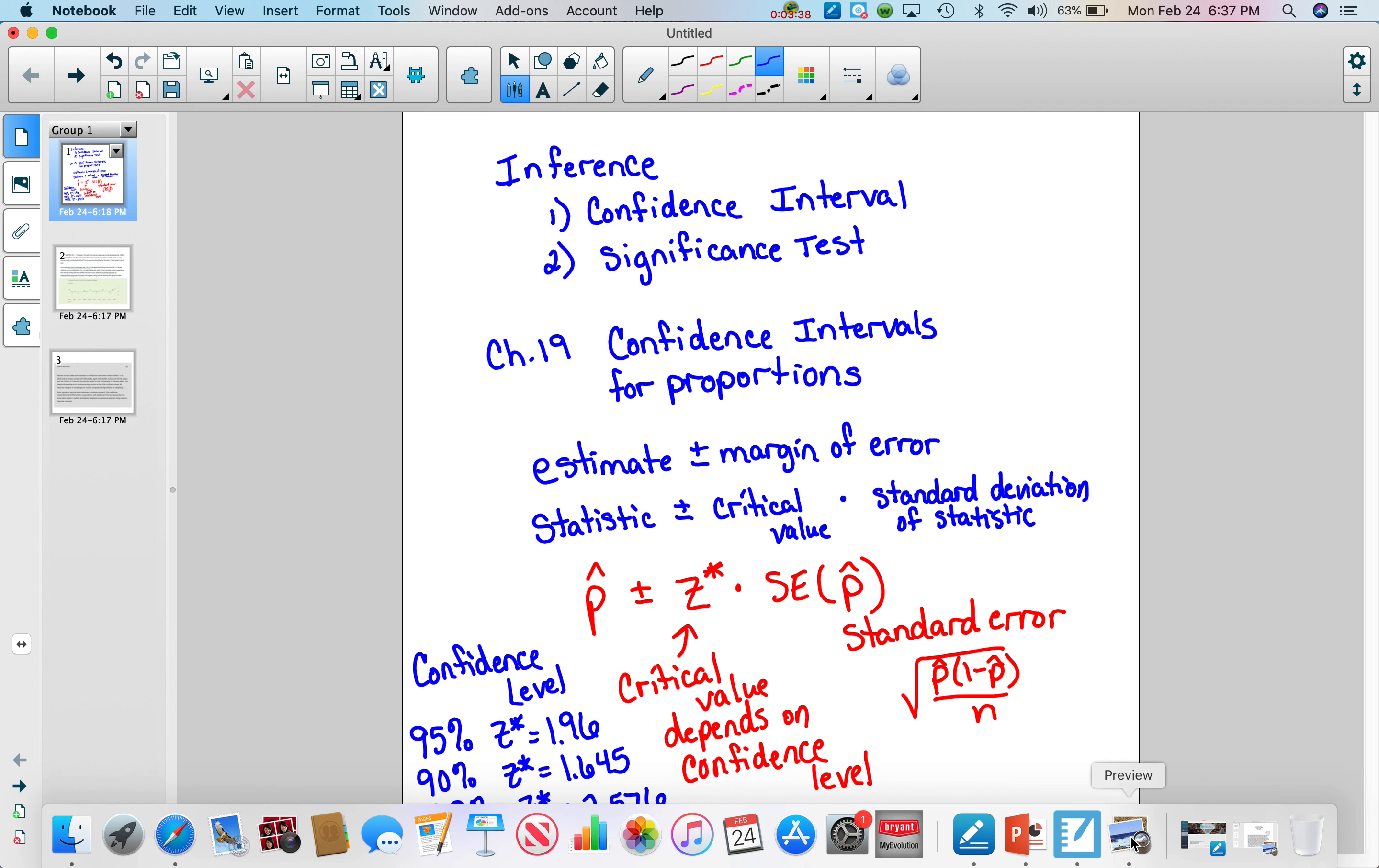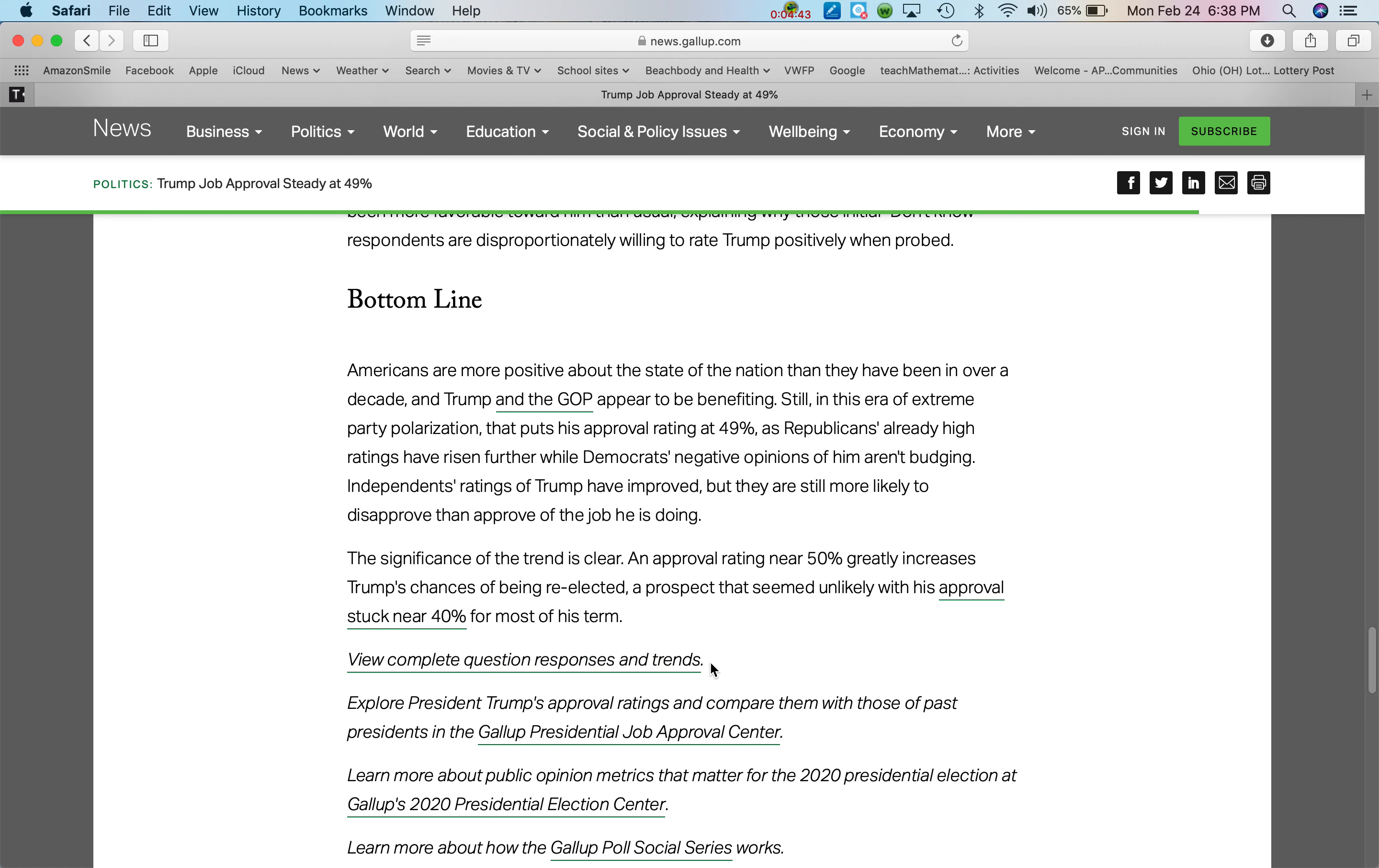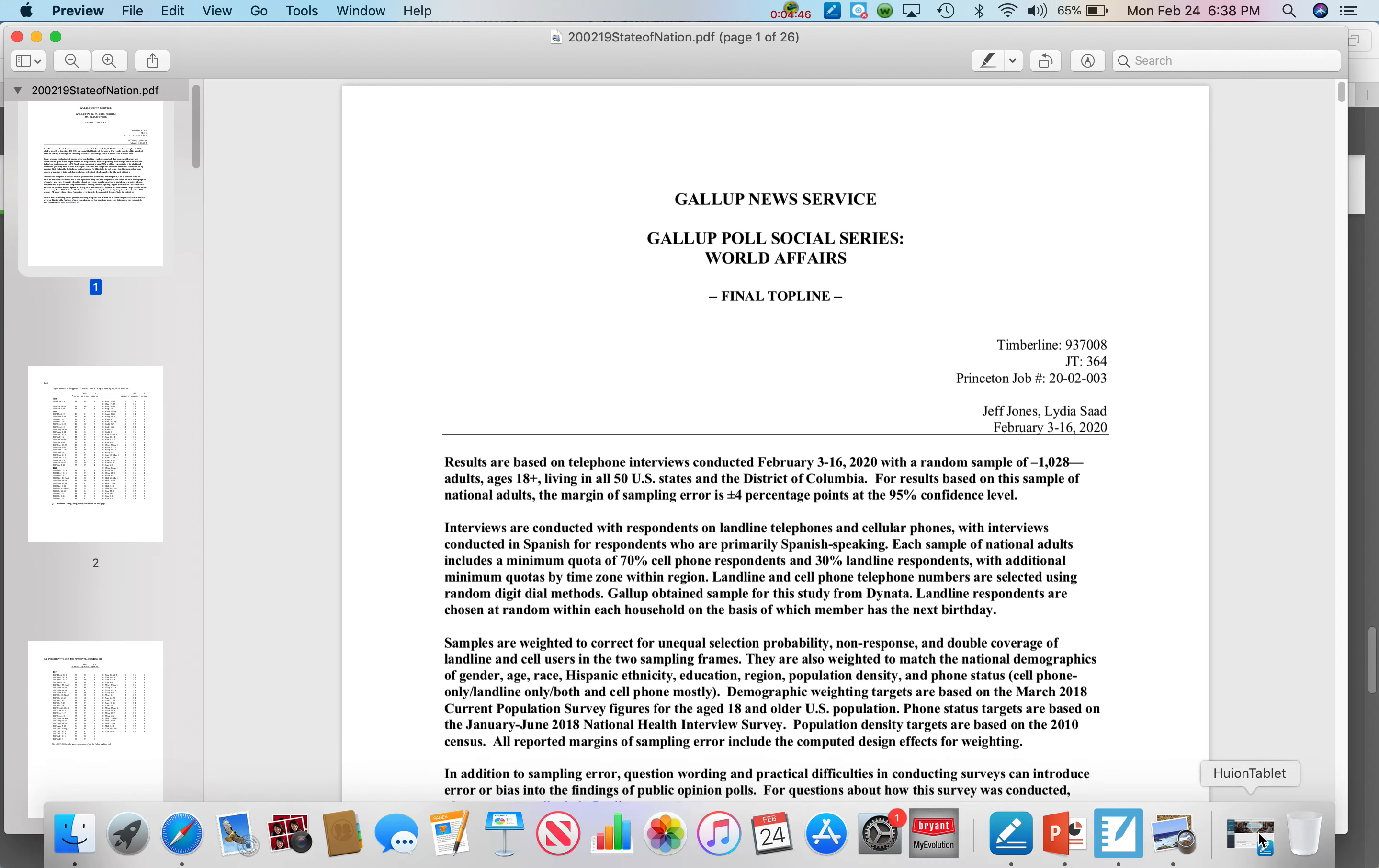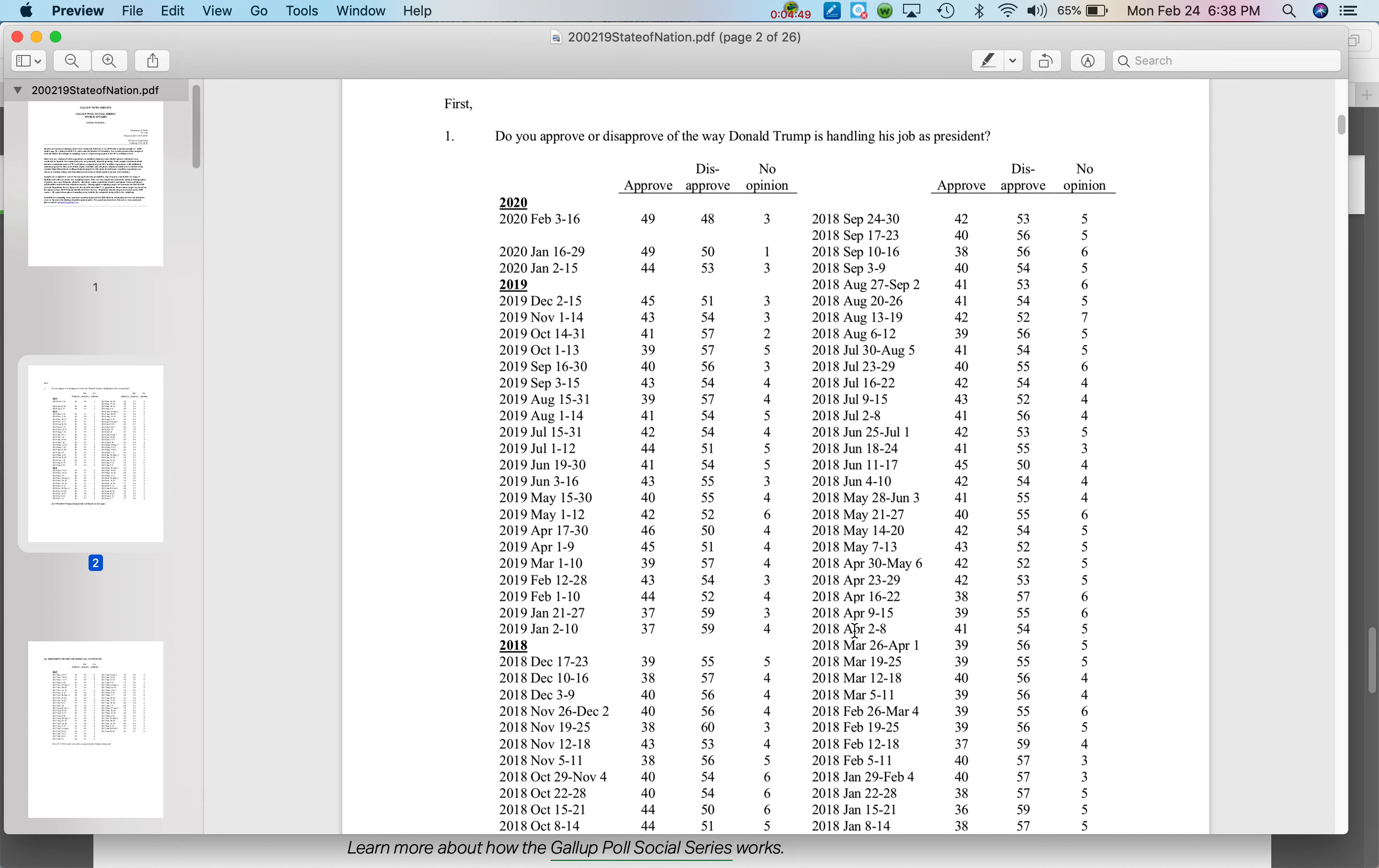It talks, splits it up between Republicans, independents, and Democrats. This particular report talks about how different people who were surveyed, whether or not they're satisfied with the way the nation's going. I wanted to show you this part here where it talks about you can view complete question responses and trends. They'll call and ask, do you approve or disapprove of the way Donald Trump is handling his job as president, and the question is always the same so they don't have any kinds of wording bias.